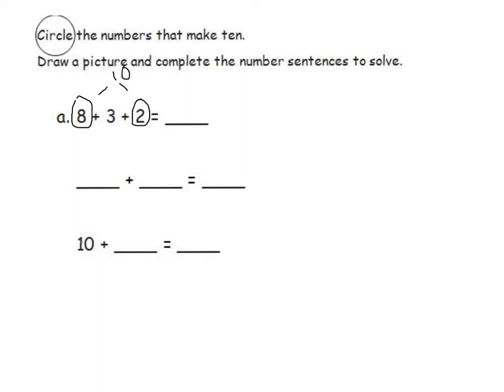I will then make a drawing to represent the two numbers that make ten. I will draw eight black circles. One, two, three, four, five, six, seven, eight. And two red circles. One, two. I will then draw a box around the numbers that make ten.